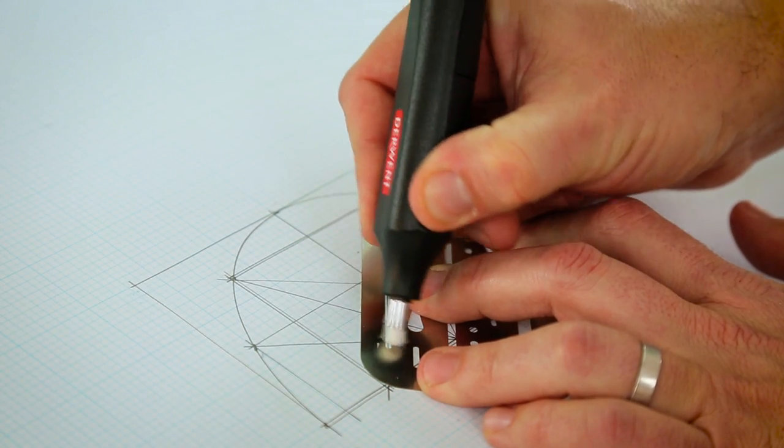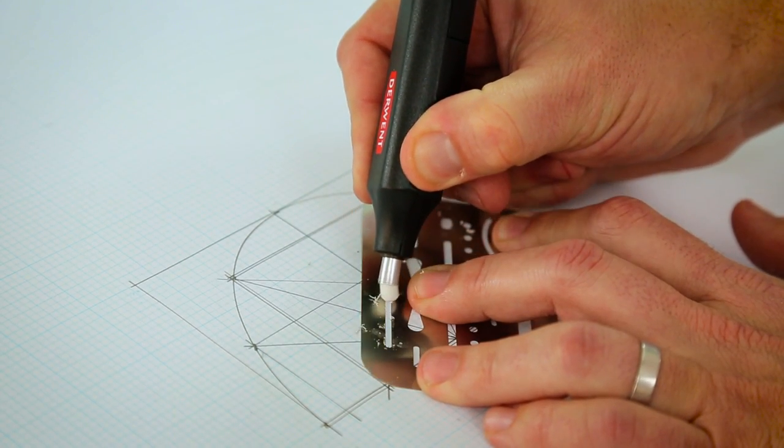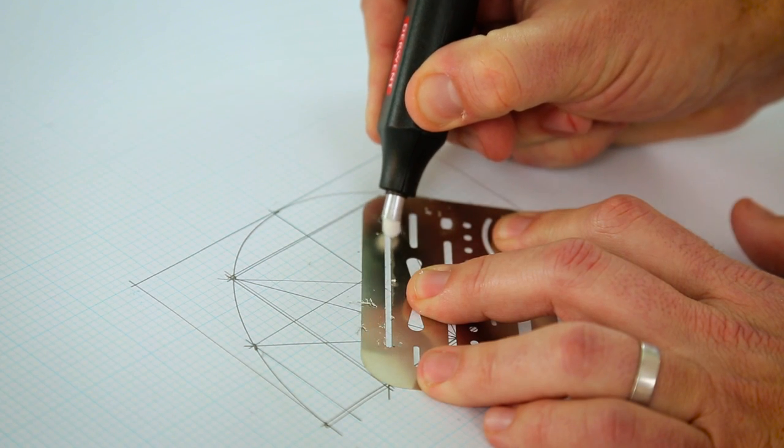I tend to prefer vinyl erasers because they're tough, they don't crumble, and the color doesn't rub off on the drawing surface. If you have a challenging area to erase on your drawing, you can use an eraser shield.